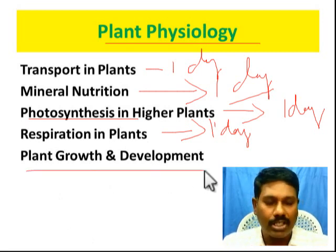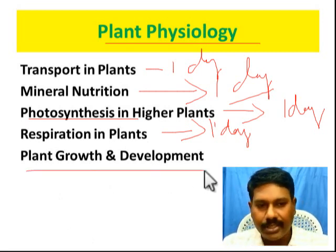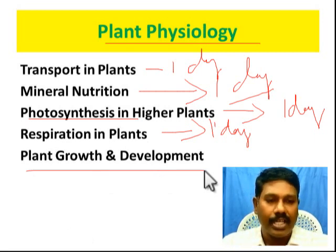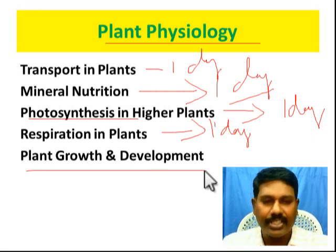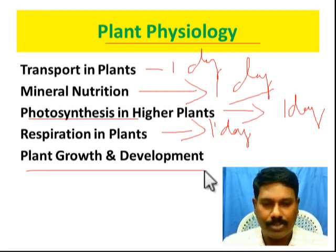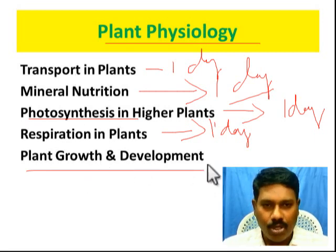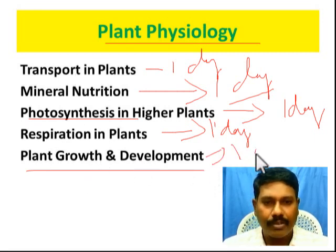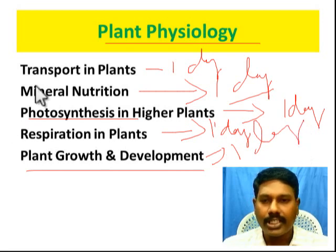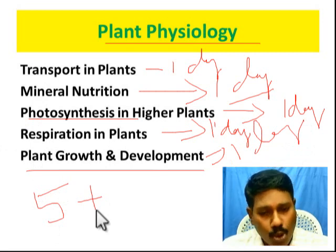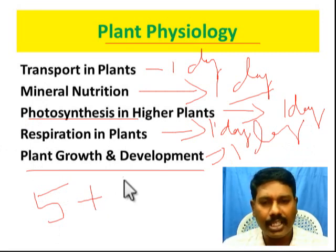The last topic in plant physiology is plant growth and development - the different hormones: auxin, cytokinin, gibberellins, and ethylene. If you want to study all of these, you can study using a list or table format. You can study using a chart. Three days of 4 hours, or 5 days of 4 hours. Plus there are three whole chapters there.